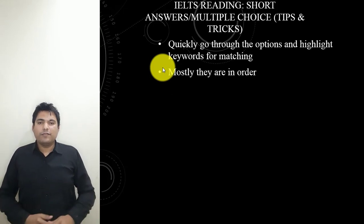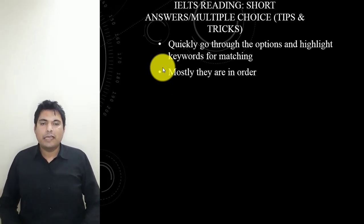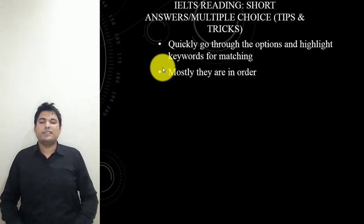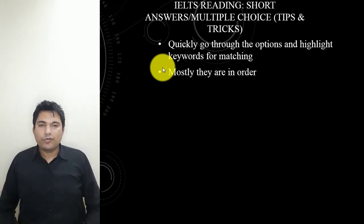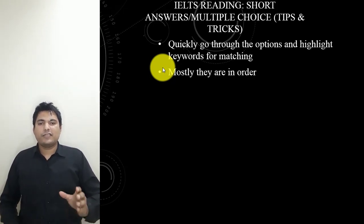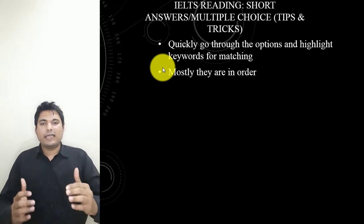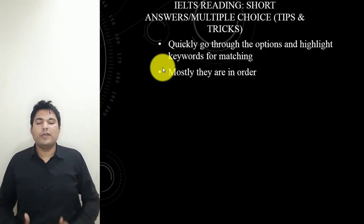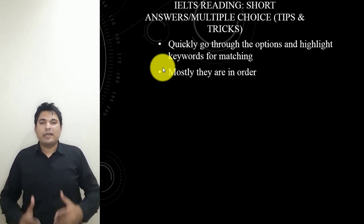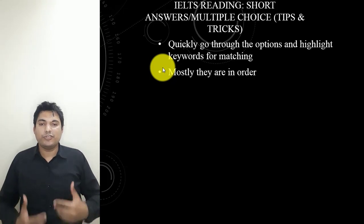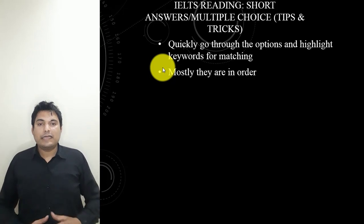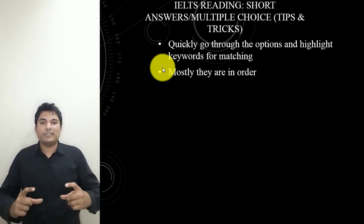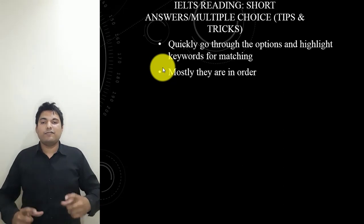The next tip is that mostly these types of questions are in order, though it is not always the case. Most of the time, the answer to the next question will come after the previous one in the passage, which makes it easier to solve. However, you shouldn't assume they are always in order. If they are not in order, you should take two questions at the same time and try to find their answers together.